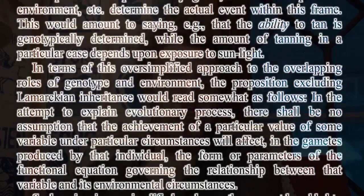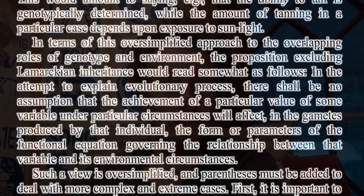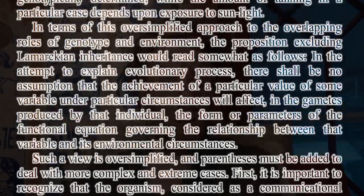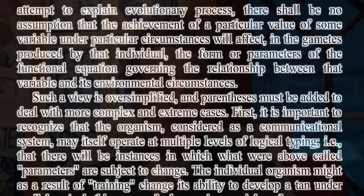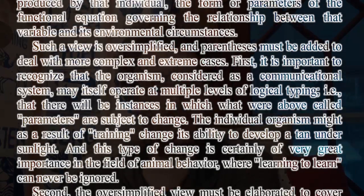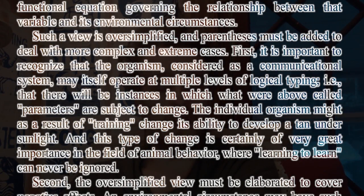In terms of this oversimplified approach to the overlapping roles of genotype and environment, the proposition excluding Lamarckian inheritance would read somewhat as follows: In the attempt to explain evolutionary process, there shall be no assumption that the achievement of a particular value of some variable under particular circumstances will affect, in the gametes produced by that individual, the form or parameters of the functional equation governing the relationship between that variable and its environmental circumstances. Such a view is oversimplified, and parentheses must be added to deal with more complex and extreme cases.